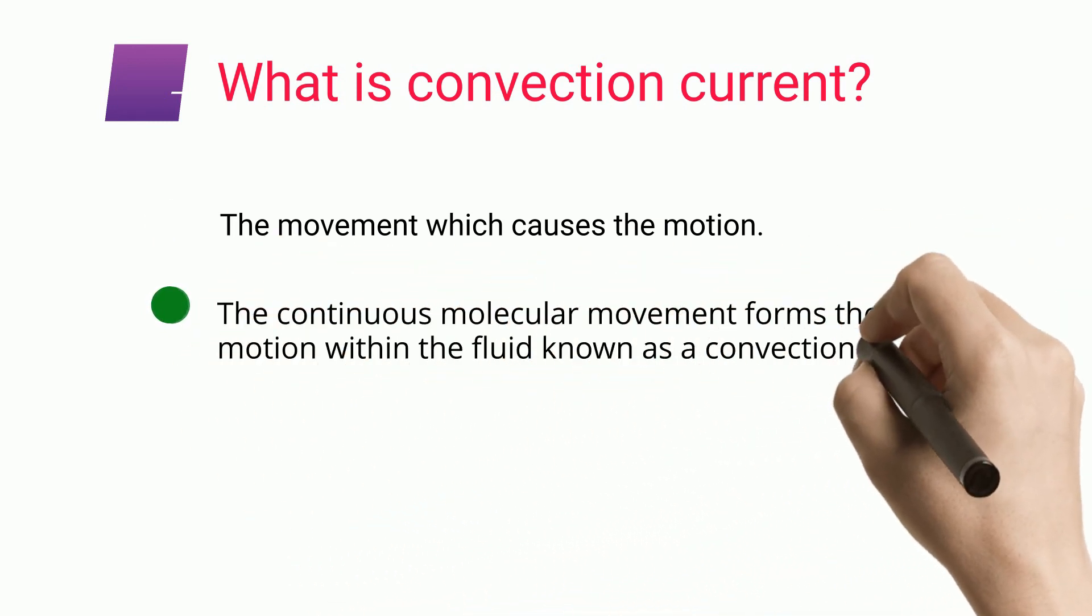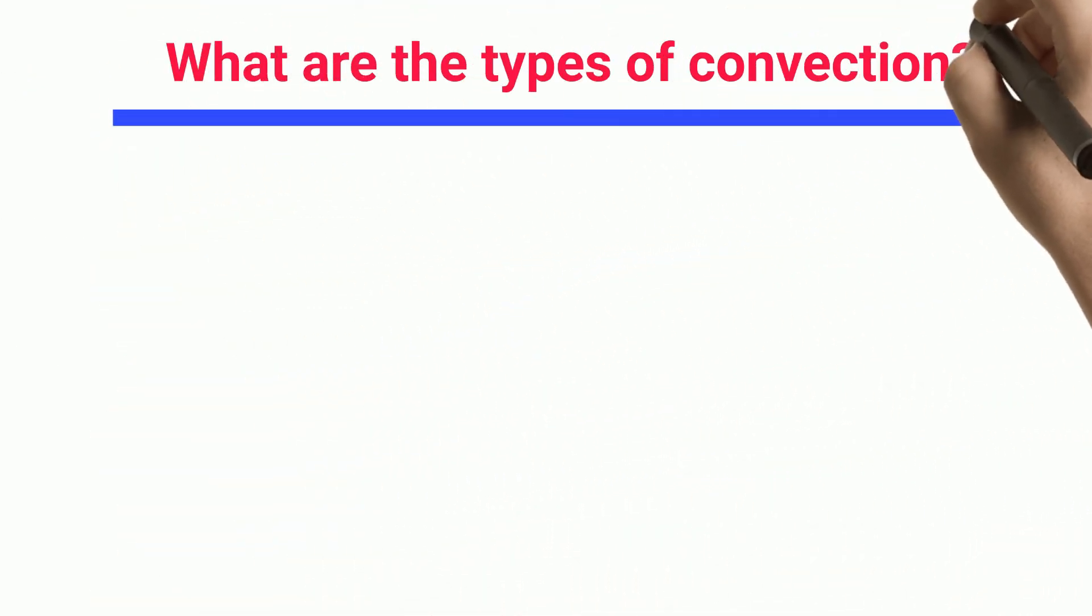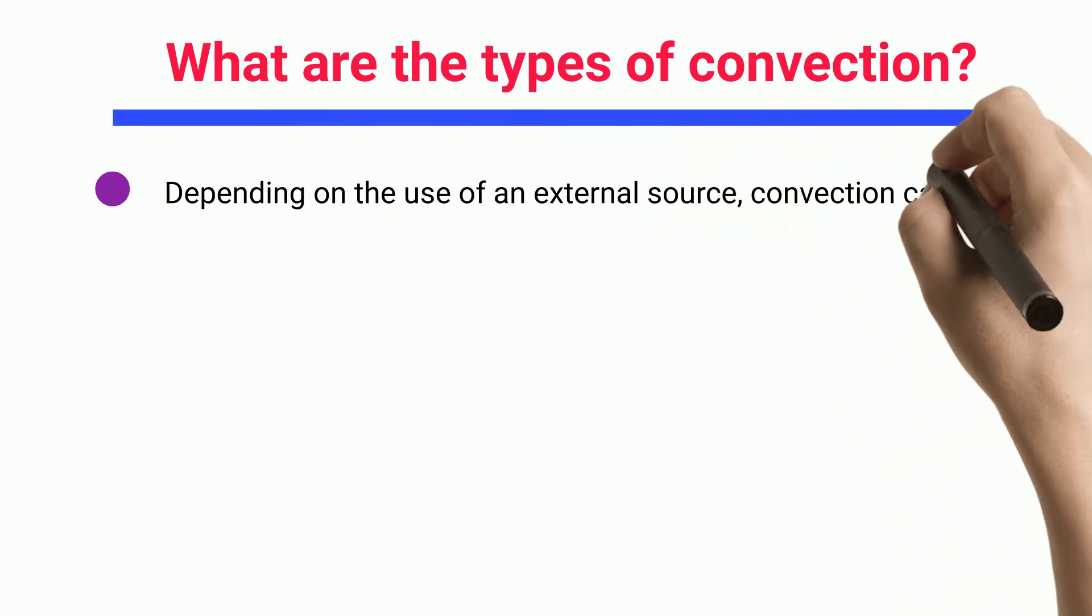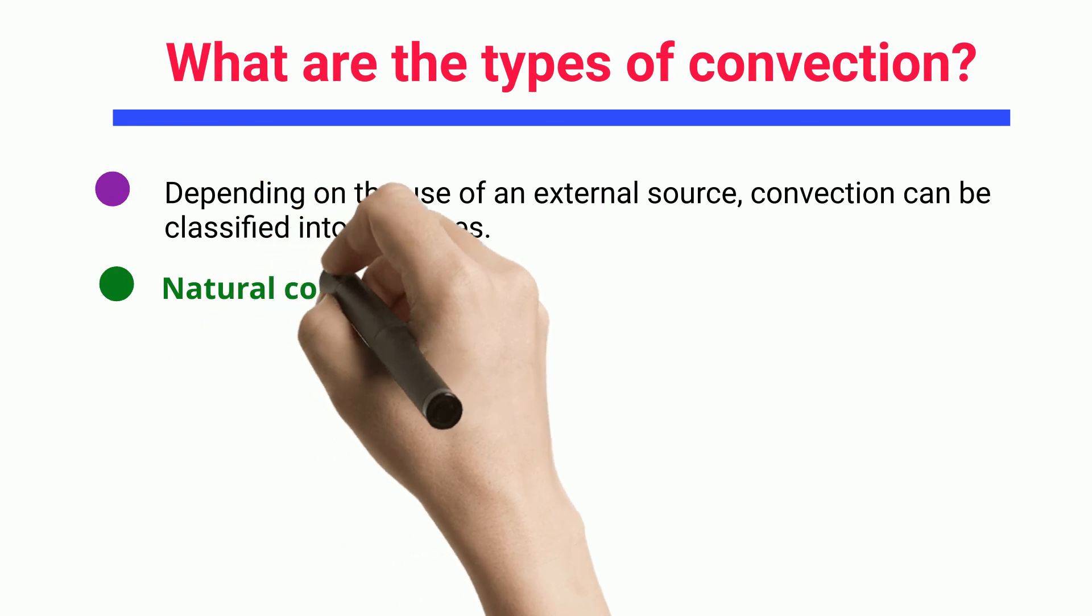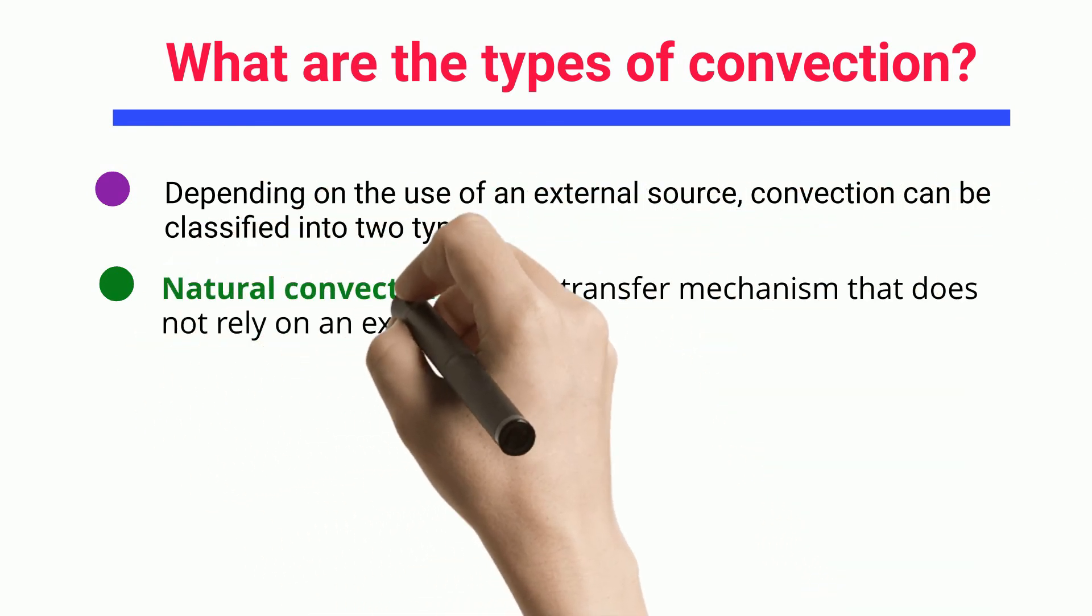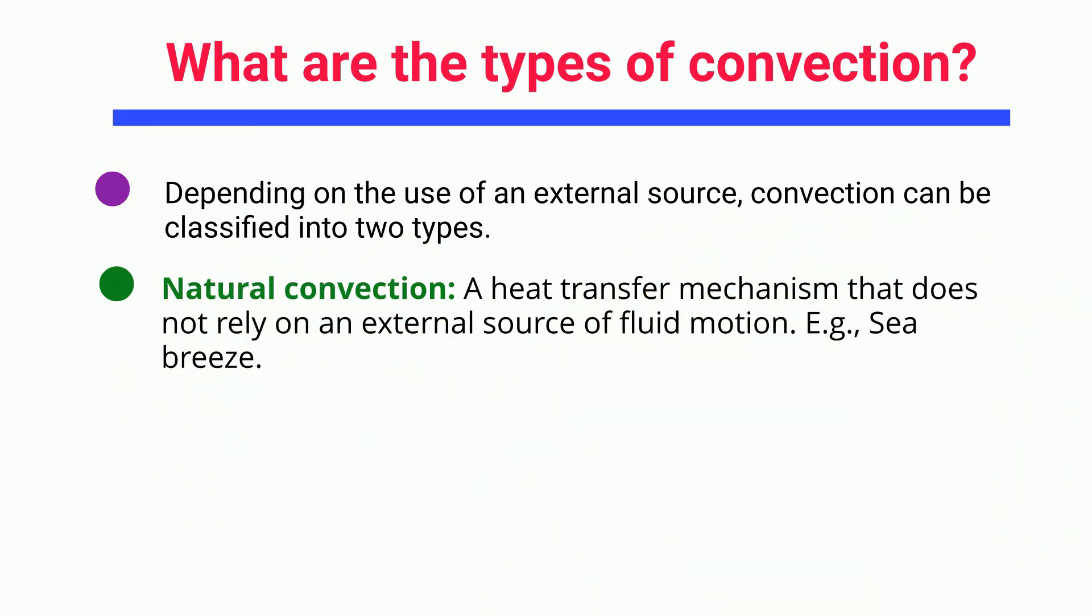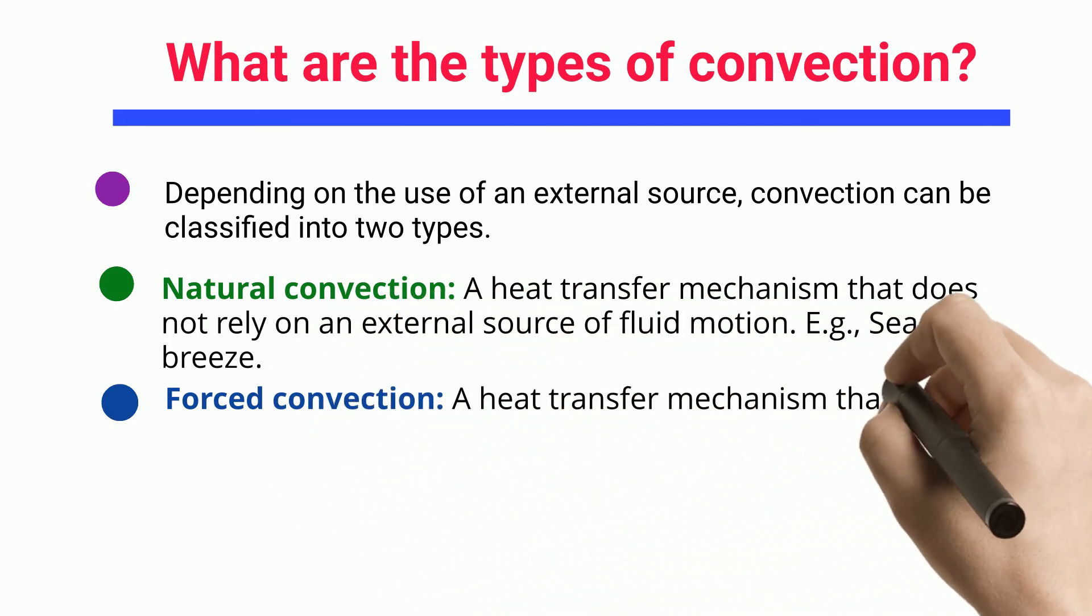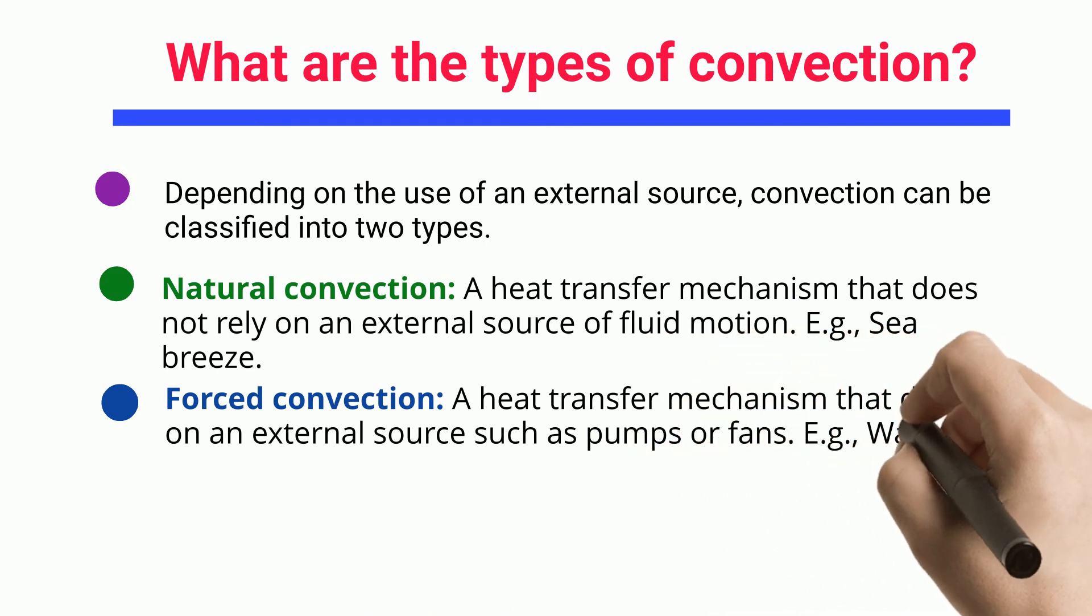What are the types of convection? Depending on the use of an external source, convection can be classified into two types. Natural convection: a heat transfer mechanism that does not rely on an external source of fluid motion, for example sea breeze. Forced convection: a heat transfer mechanism that depends on an external source such as pumps or fans, for example water geysers.